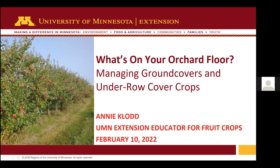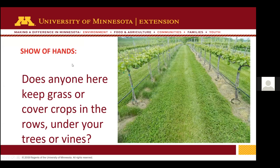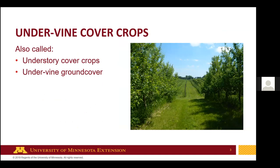I'm curious — does anyone currently keep grass or cover crops in your rows, underneath your trees or vines? You can say that in the chat. I'm going to be talking about under-vine or under-tree cover crops. We call these understory cover crops, under-vine, under-row, or under-tree ground covers. Whenever I use any of these terms, I'm talking about plants we plant or let grow underneath the tree rows.